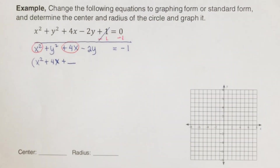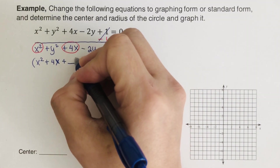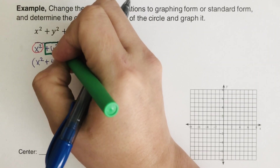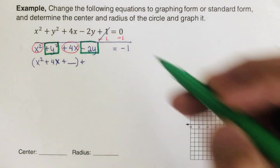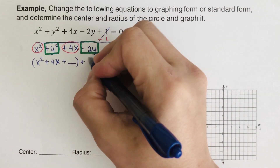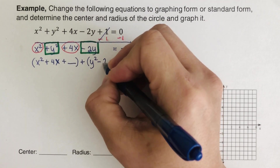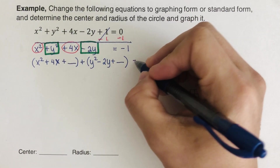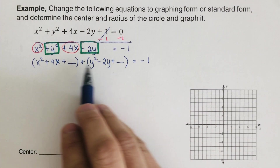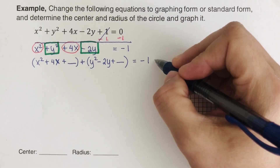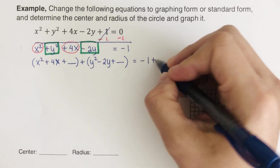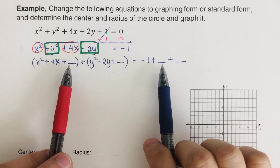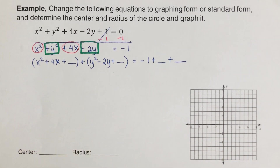In this group we are going to add a blank because our purpose is to complete the square — so x squared plus 4x plus blank. Then we group together all the y terms: y squared minus 2y plus blank. That equals negative 1. Since I added two blanks on the left side, I add two blanks on the right side as well to keep the equation balanced — plus blank plus blank. Each blank on the right corresponds to one on the left.